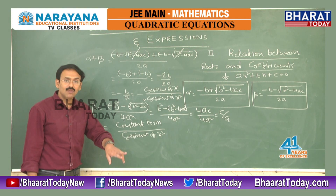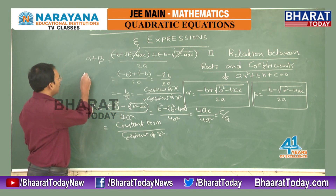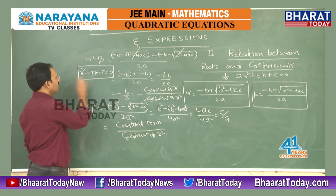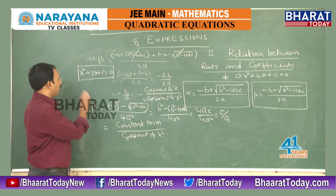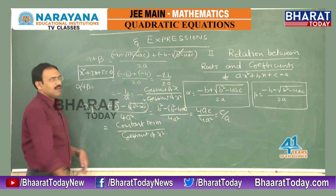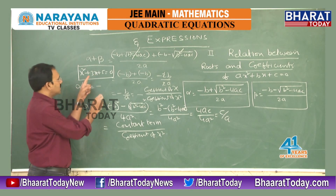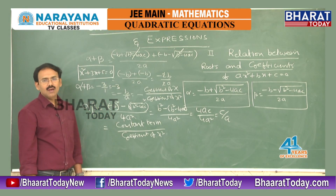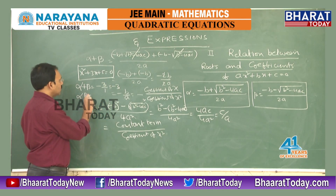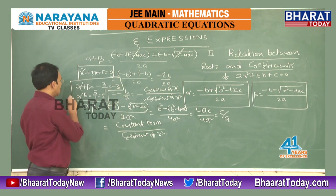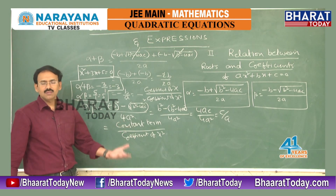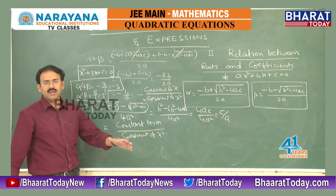For example, consider x² + 3x + 5 = 0 with roots alpha, beta. Then alpha + beta = -(coefficient of x)/(coefficient of x²) = -3/1 = -3. And the product alpha·beta = constant term / coefficient of x² = 5/1 = 5. When a quadratic equation is given, we can find sum of roots as -b/a and product of roots as c/a respectively.